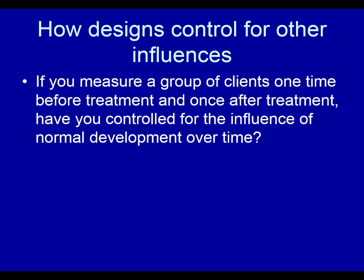How do designs control for other influences? If you measure a group of clients one time before treatment and one time after treatment, have you controlled for the influence of normal development over time? You haven't, because you've only depicted your clients at one fixed point in time before treatment — you don't know which direction they've been going. If you measure them several times before treatment, as in the traditional AB design, you have a mechanism for addressing maturation.